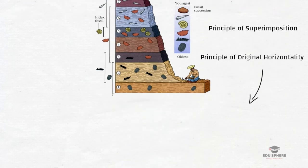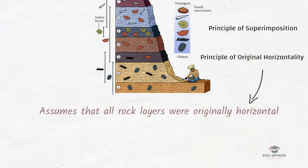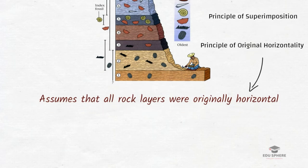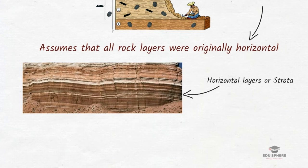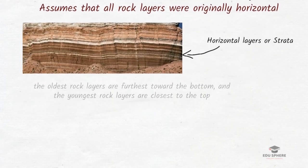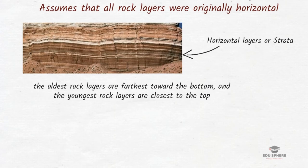The principle of Original Horizontality simply means that all rock layers were originally horizontal. It only applies to sedimentary rocks. Sedimentary rocks are composed of sediments which are deposited and compacted in one place over a period of time. Regular sediments like sand, silt and clay tend to accumulate over a wide horizontal area with a general consistent thickness. Once we assume that all rock layers were originally horizontal, we can make another assumption that the oldest rock layers are furthest towards the bottom and the youngest rock layers are closest to the top.